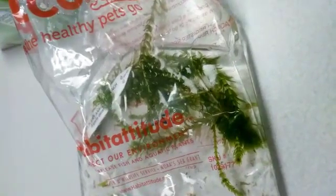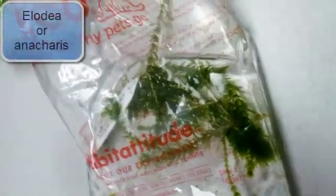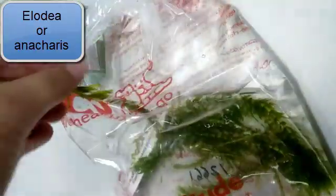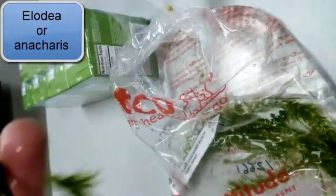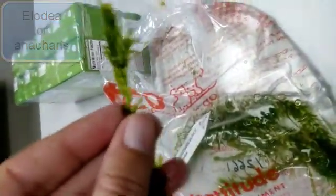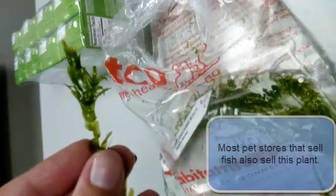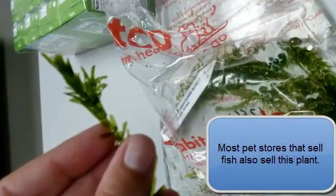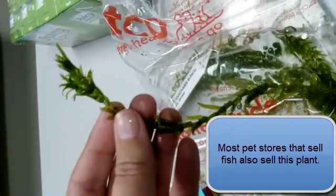So what you're looking at here is a common aquarium plant called anacharis. This is what we're going to be looking at under the microscope. It has kind of a feathery, leaf-type structure.